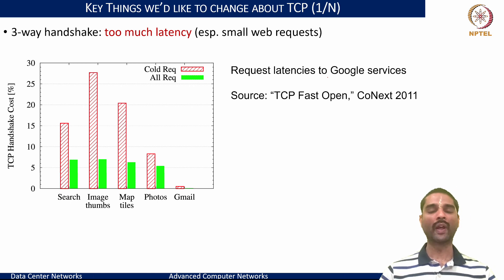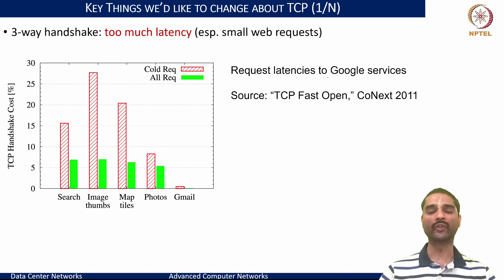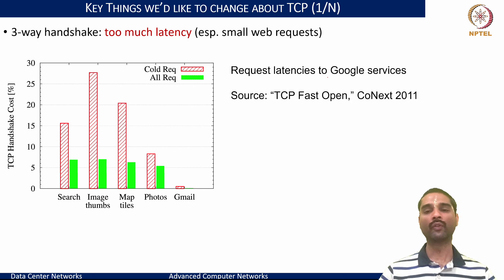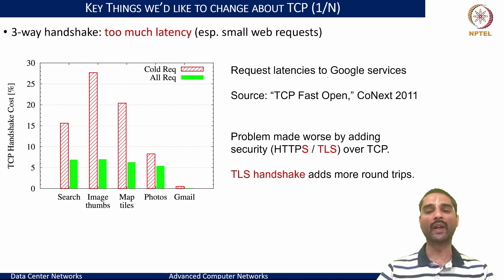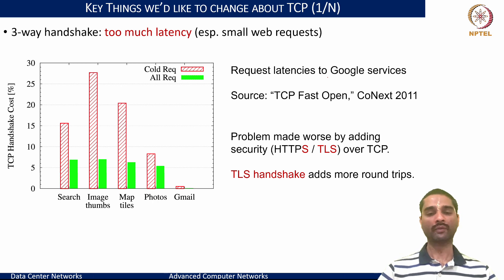Besides that, when you add the overheads necessary for ensuring an encrypted channel using TLS, you need additional handshakes between client and server to negotiate cryptographic parameters and exchange certificates so that the two parties can trust each other and negotiate keys. This further worsens the overhead, and with the TLS handshake we are typically talking about almost two to three additional RTTs before we could even make a request.